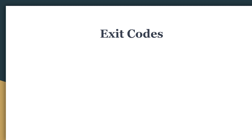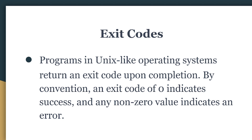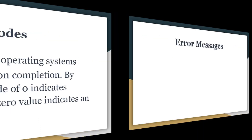The first thing is exit codes. Programs in Unix-like operating systems return an exit code whenever they are executed and after their completion. By convention, an exit code of zero indicates success. If a program is successfully executed, the exit code is zero. Any non-zero value indicates that your program or script has an error.